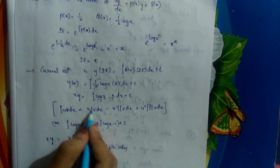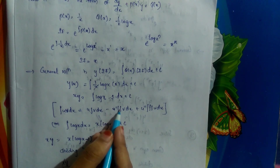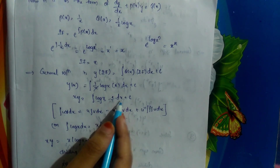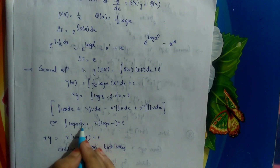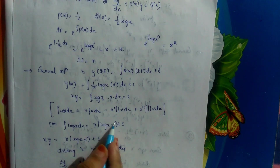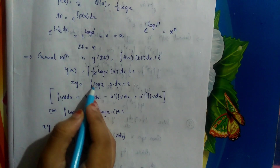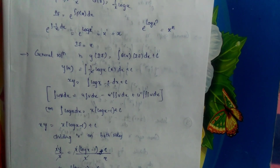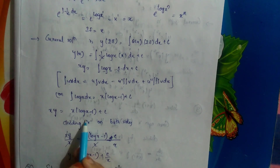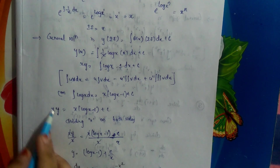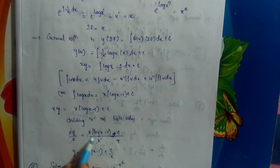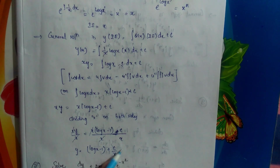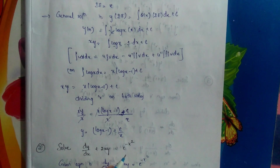Using the formula ∫log x dx = x(log x − 1) + c, we get xy equals x(log x − 1) plus c. Dividing both sides by x, we get y equals log x − 1 plus c/x. This is the general solution of the given equation.